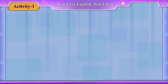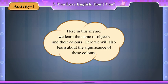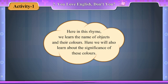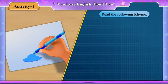Activity 1. Here, in this rhyme, we learn the name of objects and their colours. Here we will also learn about the significance of these colours. Read the following rhyme.